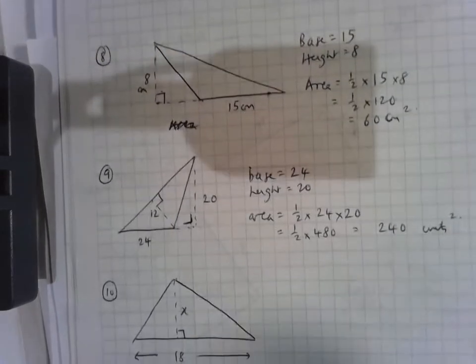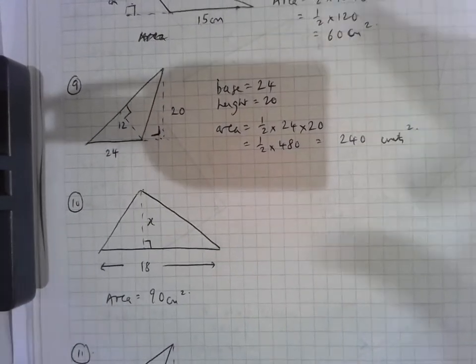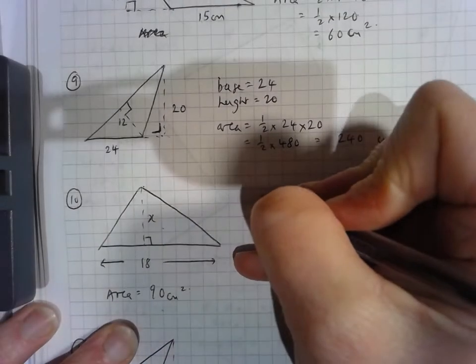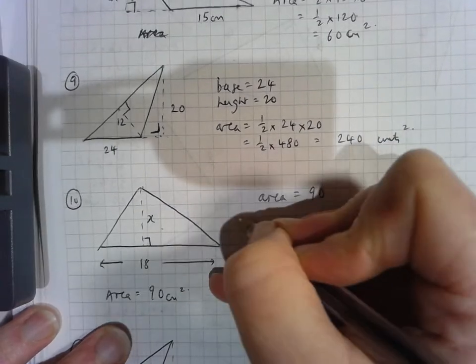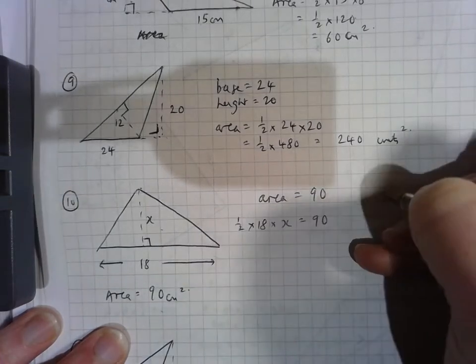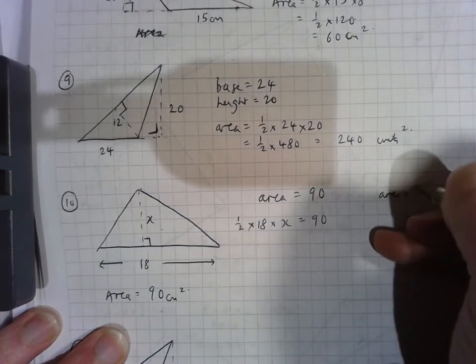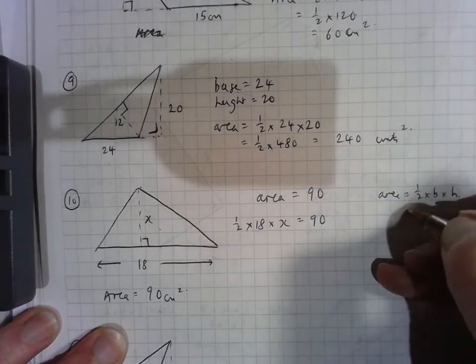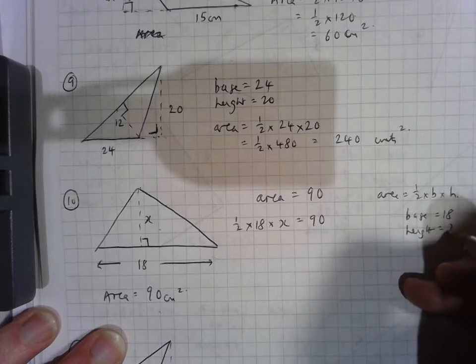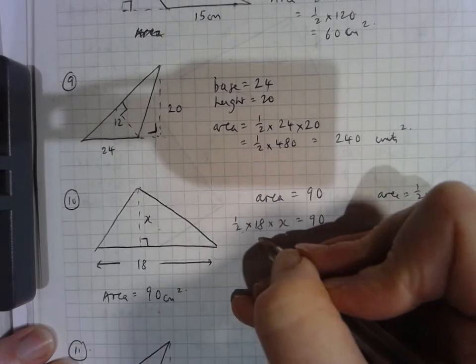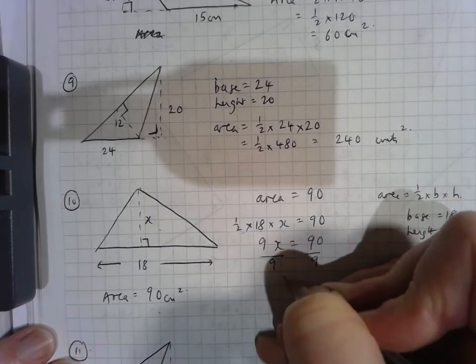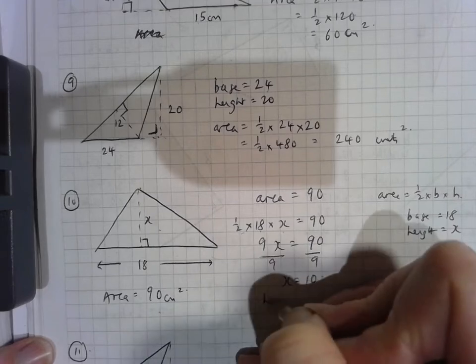Okay, now here we have another triangle. This time we're not told the height, but we are told the base is 18, and we're told the area is 90. So the area equals 90, but we know that a half by 18 by the height equals 90. So area is equal to a half times base times height, and the base was 18, and the height is x. So actually a half by 18 by x is equal to 90. So 9x is equal to 90. Ah, well, now we can see divide both sides by 9, x must be equal to 10. So the height is equal to 10.